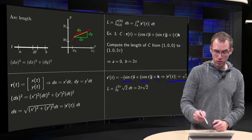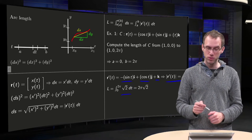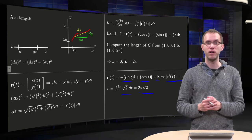So the length of the curve we have to integrate is square root of 2 from 0 to 2π, which equals 2π square root of 2.